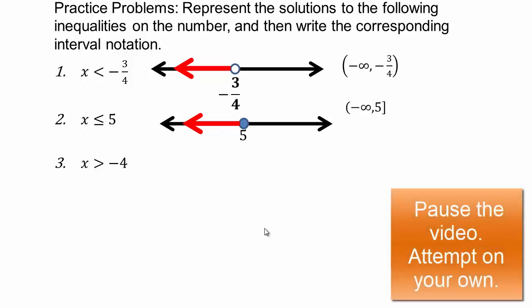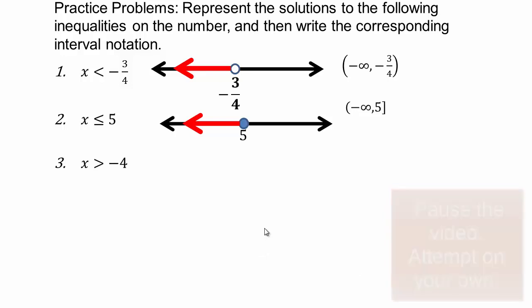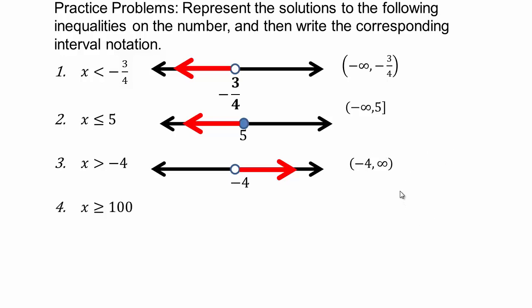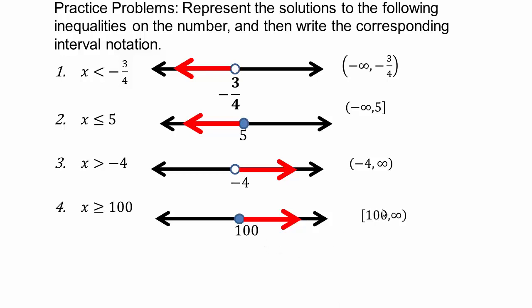For x greater than negative 4: negative 4 is not included but everything bigger than negative 4 is. The interval notation is negative 4 to infinity with round brackets at both negative 4 and infinity. For x greater than or equal to 100: that would be a square bracket at 100 to infinity.